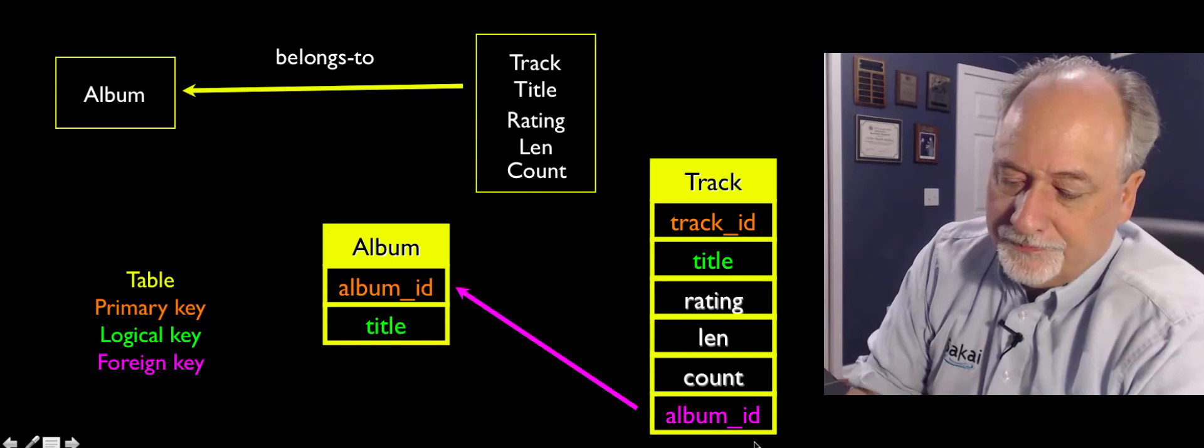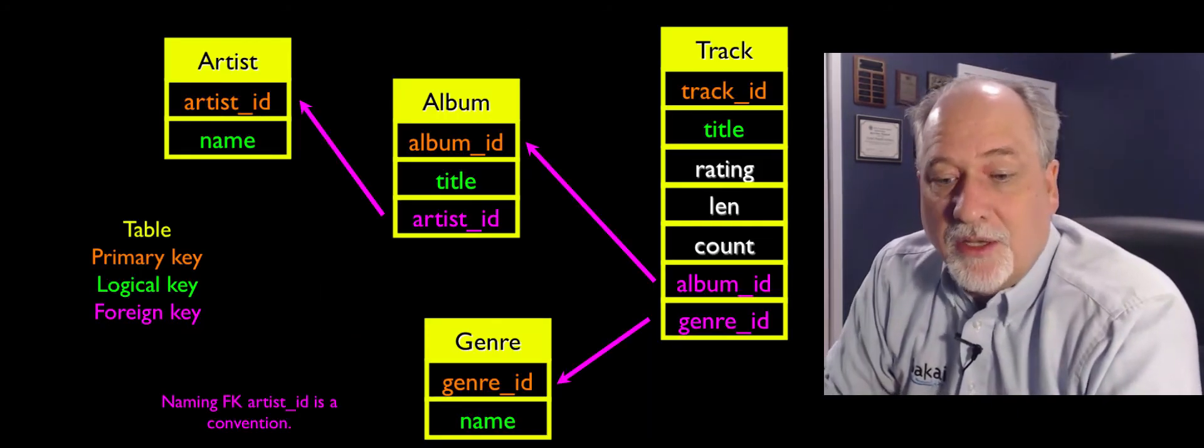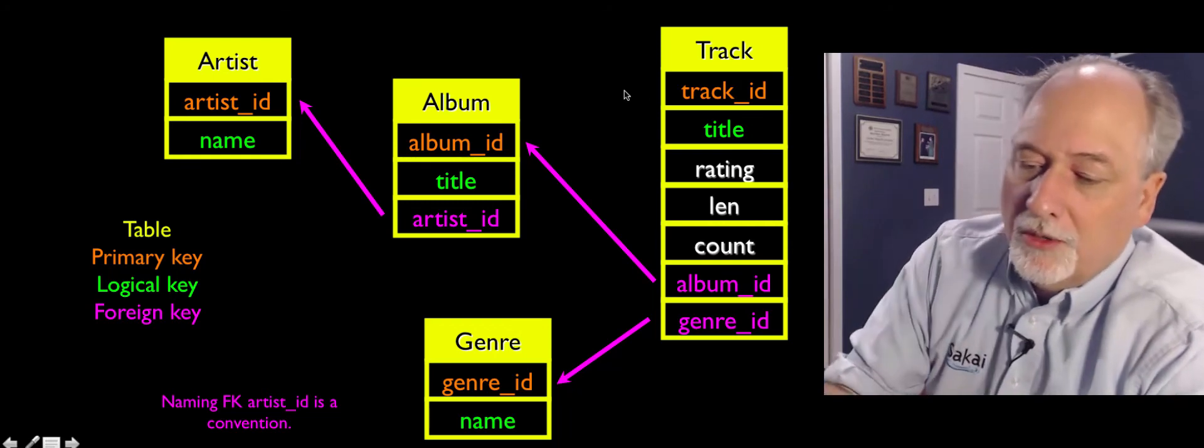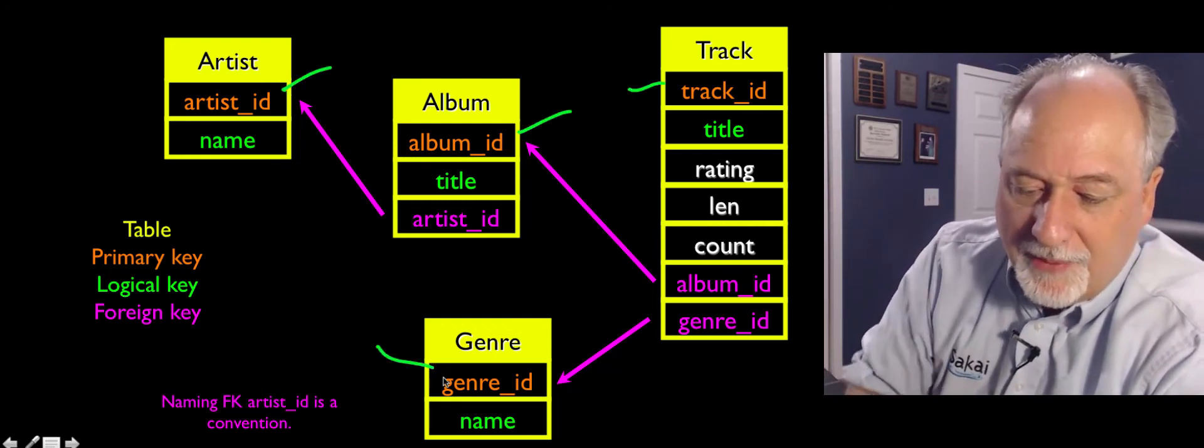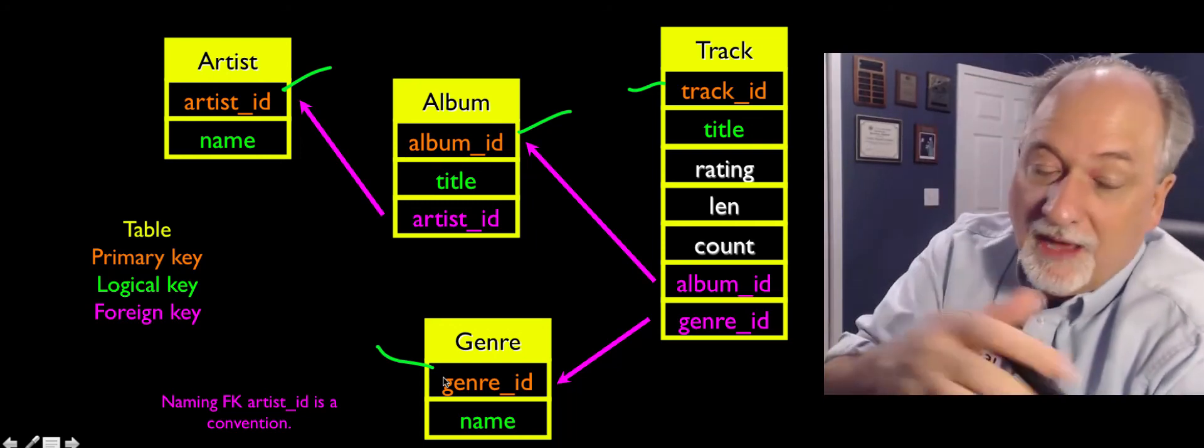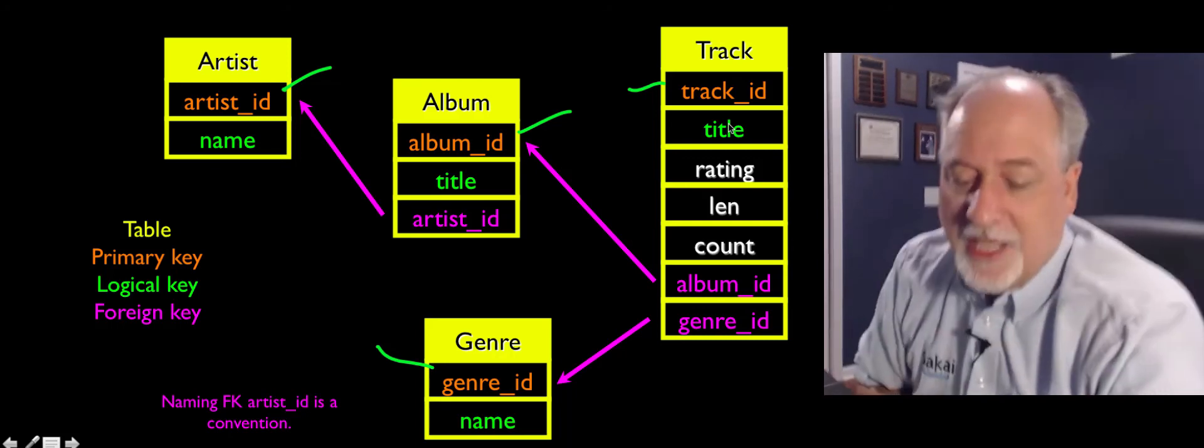Okay, so if we just apply this process over and over and over, we end up with four tables that are four objects. They all have primary keys on them. They all have logical keys. Not every table will have a logical key, but for now, we've got logical keys for all the tables.